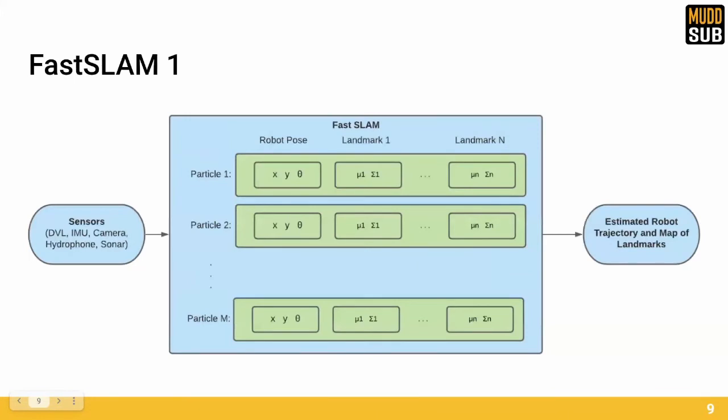We will now explain what FAST SLAM is. FAST SLAM approaches the SLAM problem with a key insight. Given the true robot path, estimating the position of each landmark can be done independently. This means that if there are n landmarks, FAST SLAM can be simplified into the problem of estimating n plus 1 objects, which are the robot pose and n landmark poses.